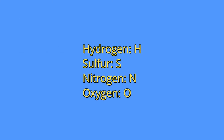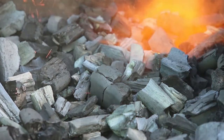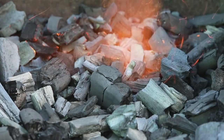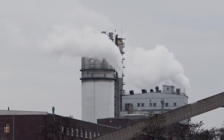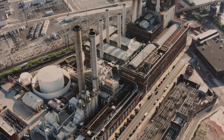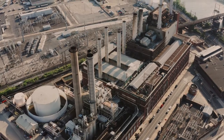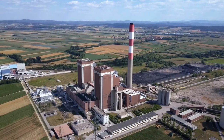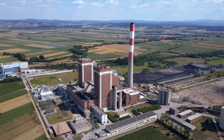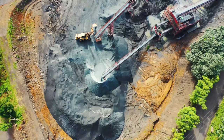Coal also contains hydrogen, sulfur, nitrogen, and oxygen in its composition. When coal is burned, its components react with oxygen to form different gases and ash. Atmospheric pollution control equipment is used to retain ash and other volatile residues formed in combustion. Waste that is not retained may cause air pollution. The recovered ash can be used in construction, mixed with cement.